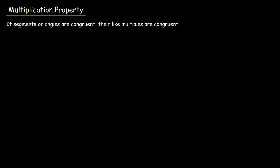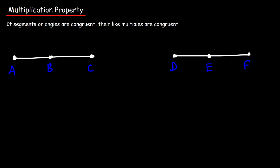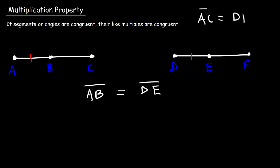Let's consider two segments. Let's say we have points A, B, C and points D, E, F. B is the midpoint of AC and E is the midpoint of DF, and we're given that segment AB is congruent to segment DE. So if AB is congruent to DE, does that mean that AC is congruent to DF? According to the multiplication property, it should be.